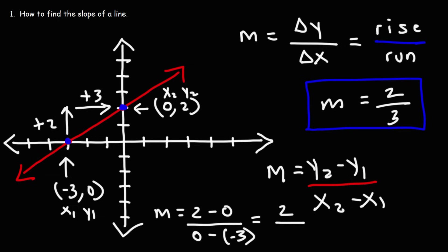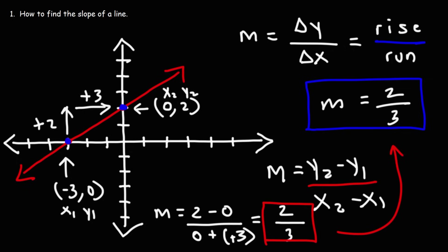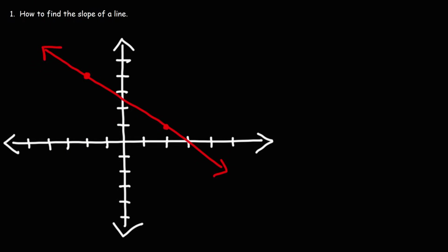The change in X — X2 minus X1 — is 0 minus negative 3. Whenever you have two negative signs next to each other it becomes positive, so it's 0 plus 3, which is 3. We get the same answer: 2 over 3. Those are two ways you can employ to calculate the slope of a line.